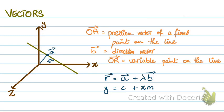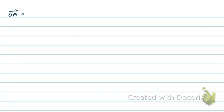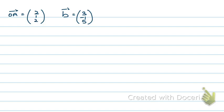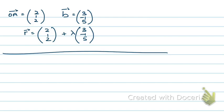Let's do a couple of examples to see how to write a line in vector form. Let's say I have a fixed point on the line: (2, 1, 2), and a direction vector of the line: (3, -1, 5). If I have to write this line in vector form, this will look like R equals to (2, 1, 2) plus lambda (3, -1, 5). That's when you're given the direction vector.